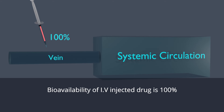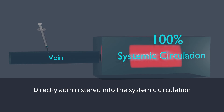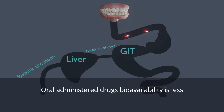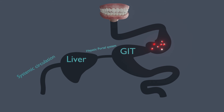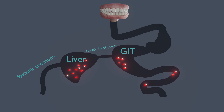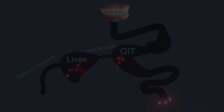Bioavailability of the drug injected via IV is 100% because it is directly administered into the systemic circulation, whereas orally administered drugs have less bioavailability because due to incomplete absorption some fraction of the drugs is excreted through feces, and the absorbed drugs also undergo first-pass metabolism, as we saw earlier.